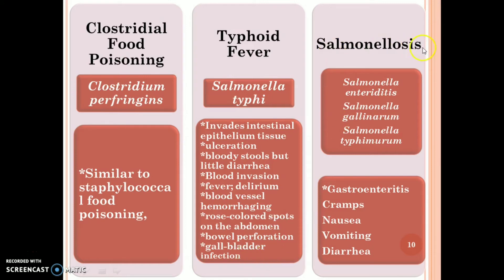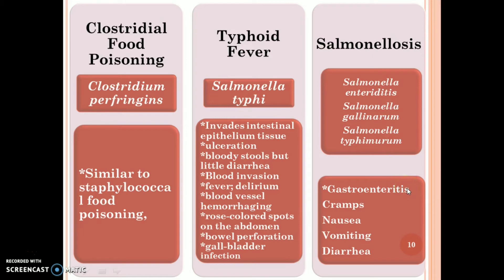Salmonellosis is caused by different species of Salmonella, including Salmonella enteritidis, Salmonella gallinarum, and Salmonella typhimurium. Symptoms are gastroenteritis, cramps, nausea, vomiting, and diarrhea.